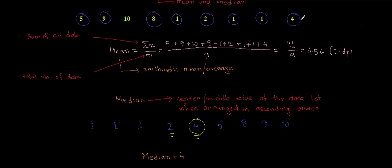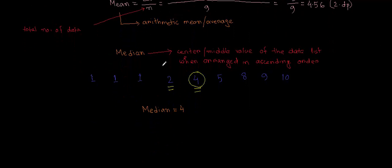So I had a data list and I calculated the mean by summing up all the data and dividing by the total number of data. Then I calculated the median by first arranging the data set in ascending order, and then identifying the middle value. The middle value is the median.